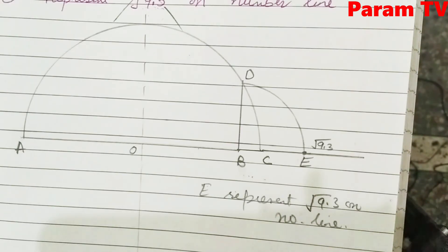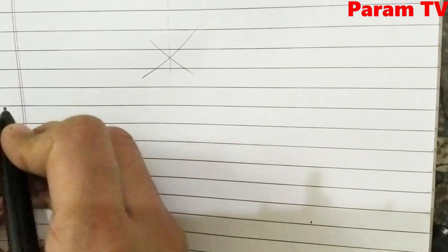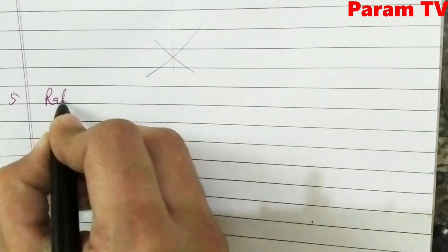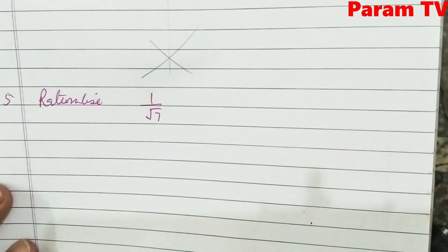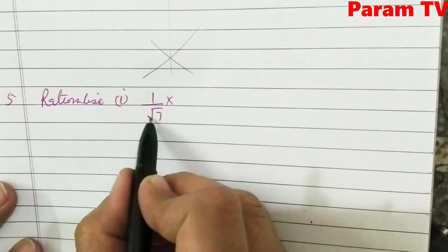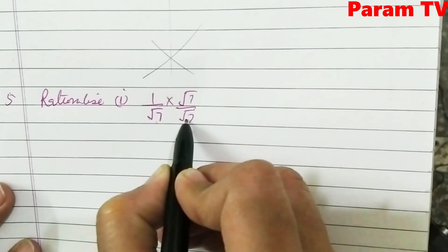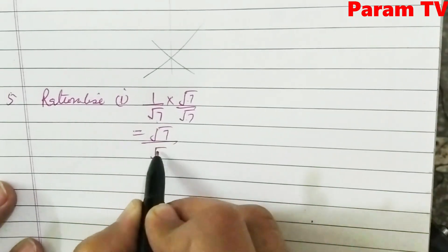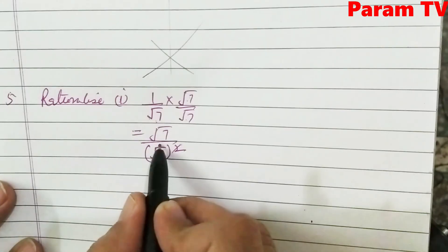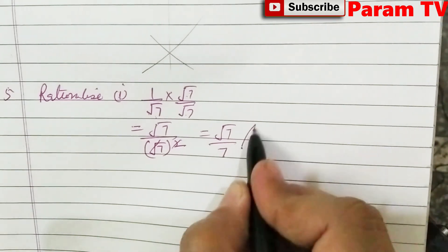Let's move to Question 5 — Rationalize. Rationalizing means eliminating the root from the denominator. First part: 1 by root 7. Multiply numerator and denominator by root 7. This gives root 7 upon (root 7)² = root 7 upon 7. That is the rationalized answer.